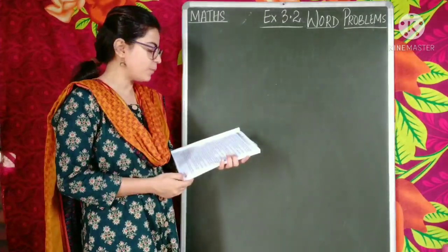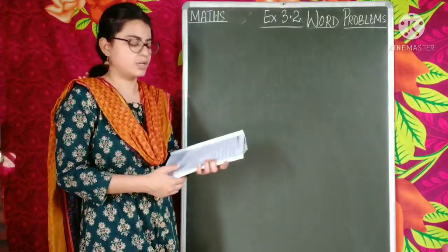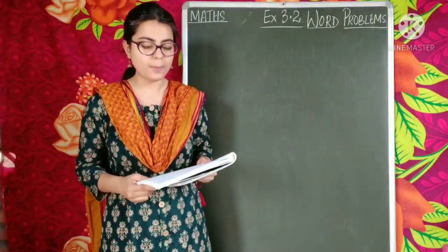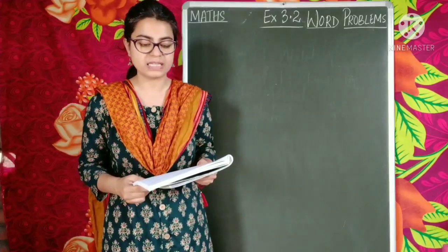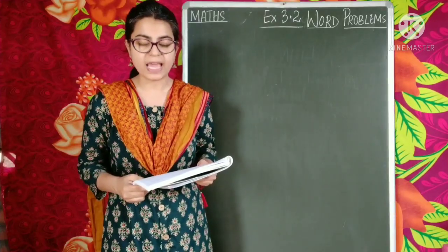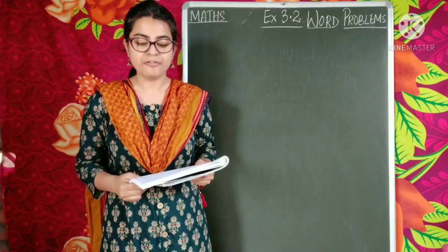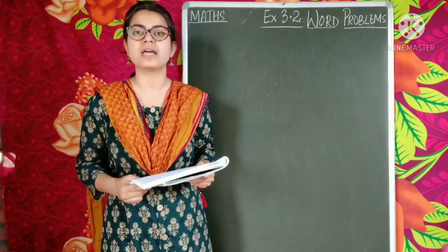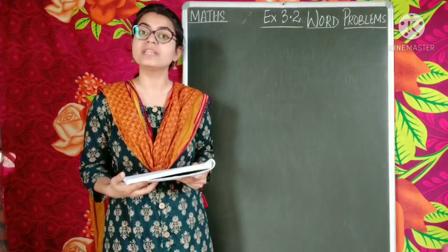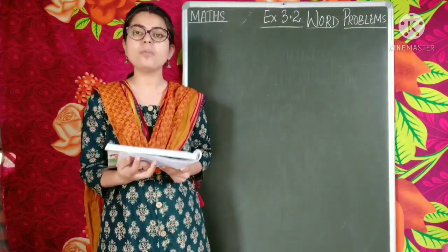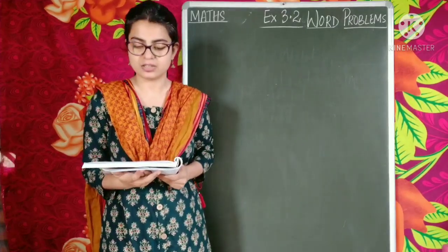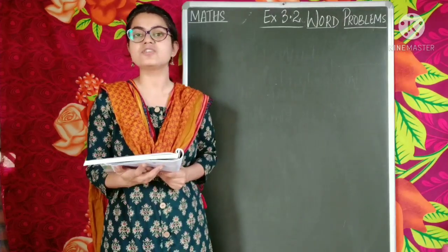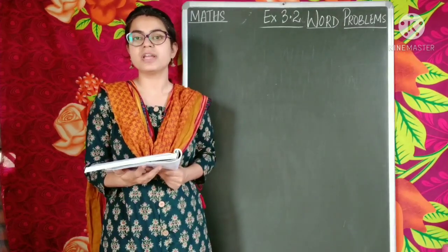I have taken up question 6. The question reads as: in an election, Abdul got 3,825 votes and Vimal got 1,309 votes more than Abdul. How many votes did Vimal get? How many votes did both of them get altogether?